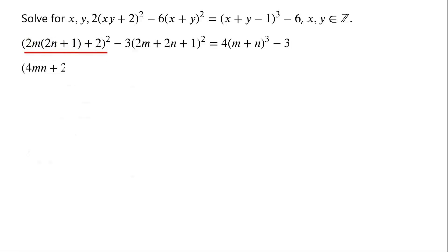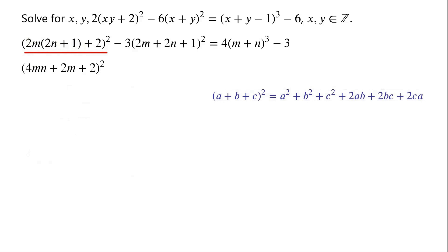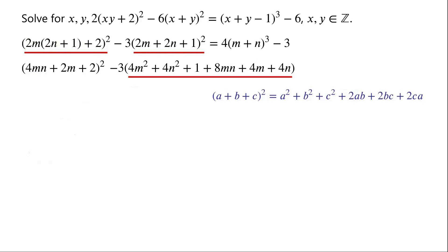2m times (2m plus 2n plus 2), all squared, is equal to (4mn plus 2m plus 2), all squared. We know that (a plus b plus c), all squared, equals a squared plus b squared plus c squared plus 2ab plus 2bc plus 2ca. By applying this, (2m plus 2n plus 1), all squared, equals 4m squared plus 4n squared plus 1 plus 8mn plus 4m plus 4n. The right-hand side of the equation is unchanged. The 3 on the right-hand side and that on the left-hand side cancel.